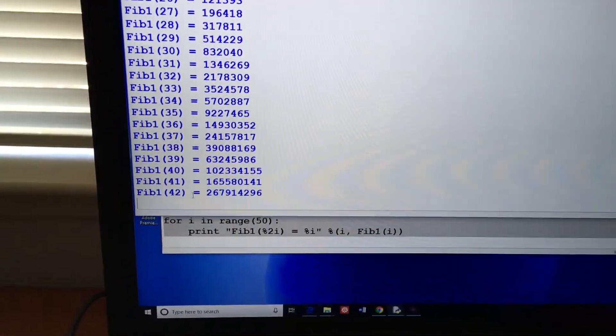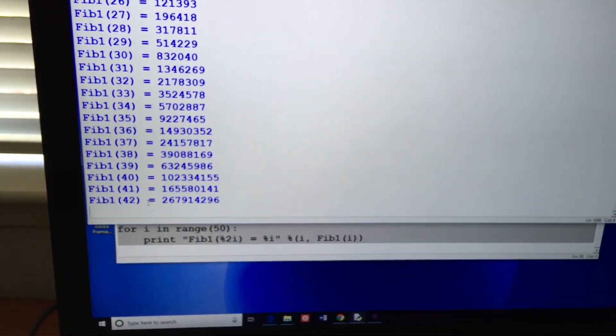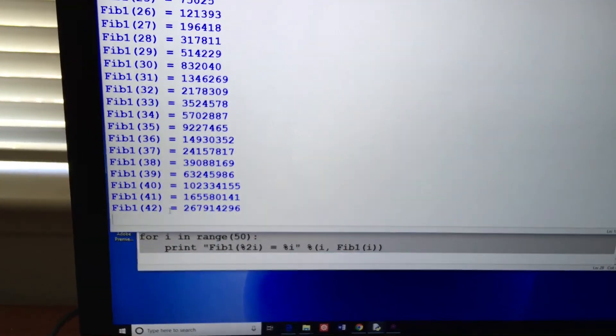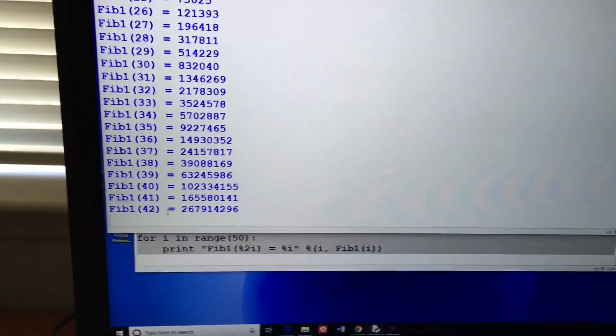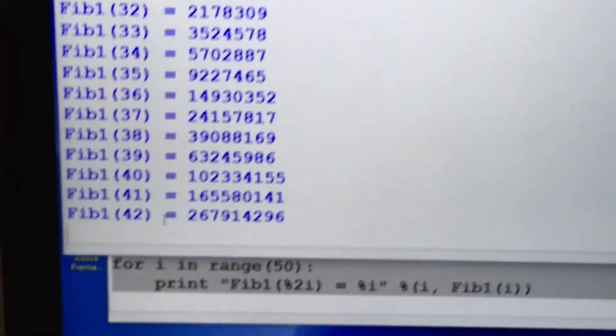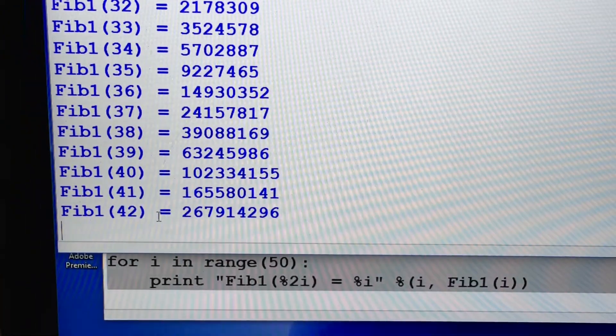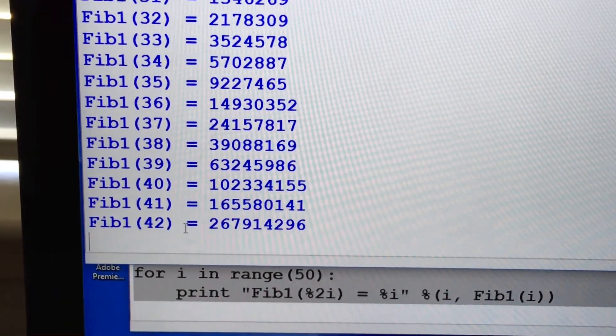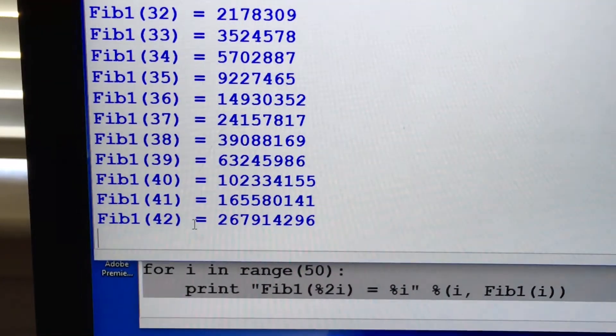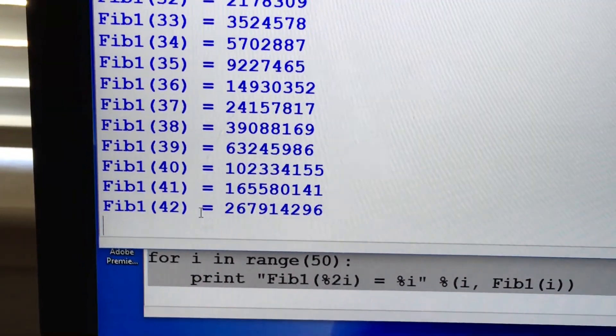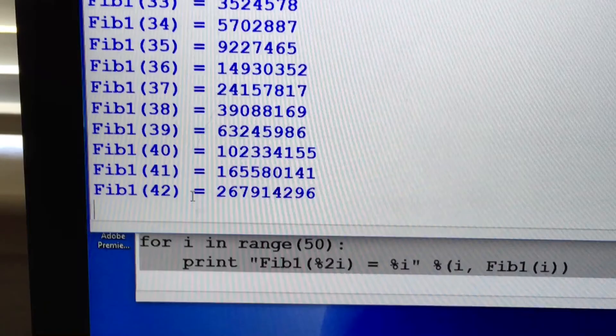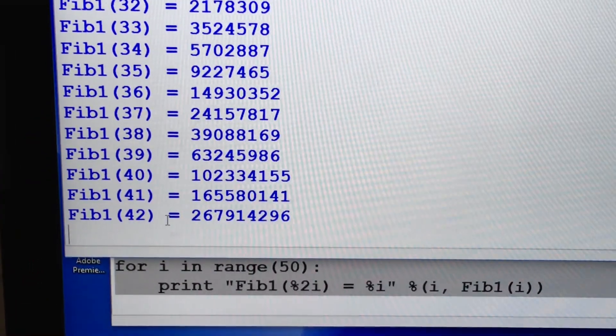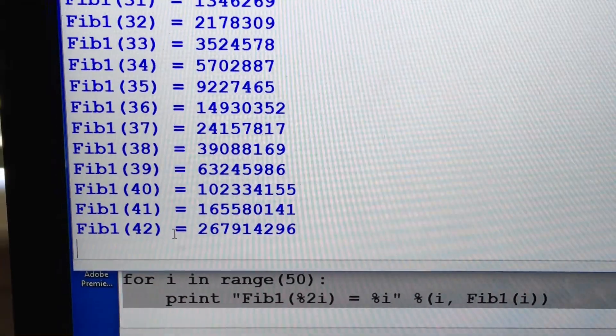If you want, you can stare at this for the last 20 seconds of the video, but I don't think we're going to get another number. Exponentially hard, the naive implementation. It's because it's redoing a lot of work, just keeps redoing work over and over and over again instead of just doing that work once. And I'm not going to wait around here for that to finish. Thank you very much.